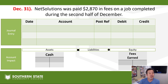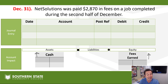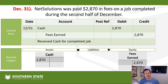December 31st — NetSolutions was paid $2,870 in fees on a job completed during the second half of December. The customer pays as soon as the job is done. Cash account is in play and we need to count that revenue — fees earned. Cash goes up on the debit; revenue increases on the credit side always. Cash goes up, fees earned is credited, making that revenue account go up.